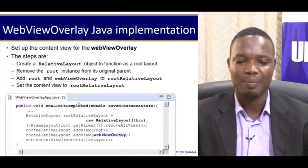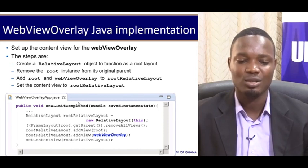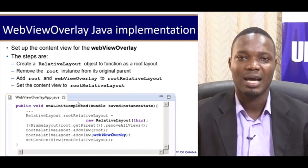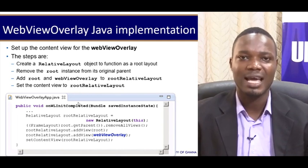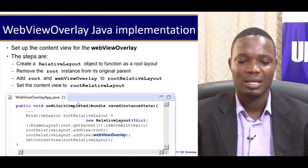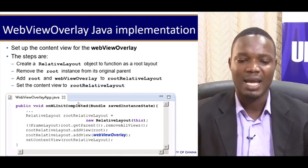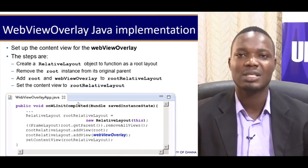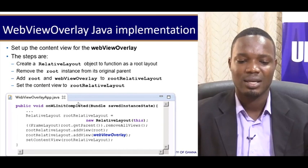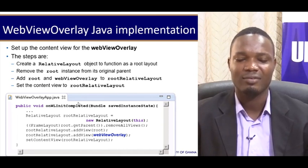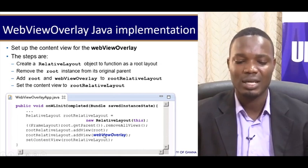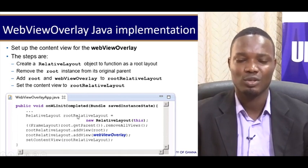Then we continue to set up the content view for the WebView overlay. You need to follow some steps: first create a relative layout, then remove the root instance from its original parent, then add the root and the WebView overlay to the root relative layout, and finally set the content view to the root relative layout. This code snippet shows how all of that could be done — it's straightforward and easy to follow.